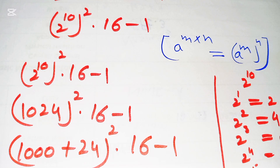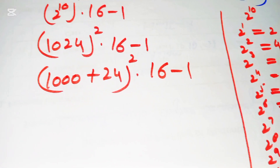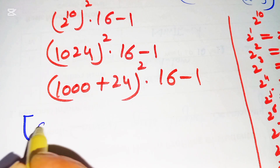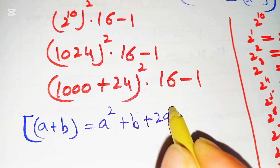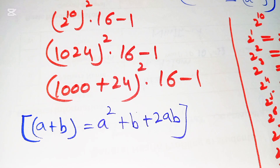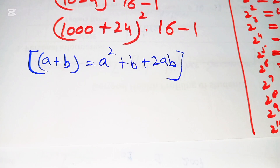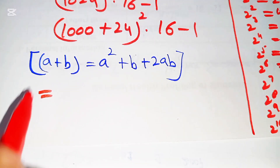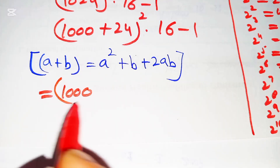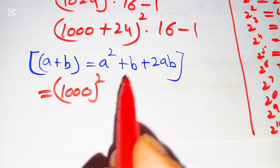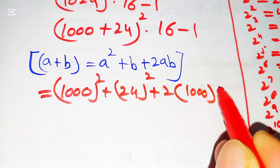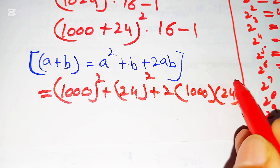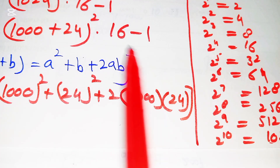Here we can solve using a nice algebraic identity, which is: a plus b, whole squared, is equal to a squared plus b squared plus 2ab. Now here a squared is 1000 squared, plus 24 squared, plus 2 multiplied by 1000, then multiplied by 24, and this times 16 minus 1.